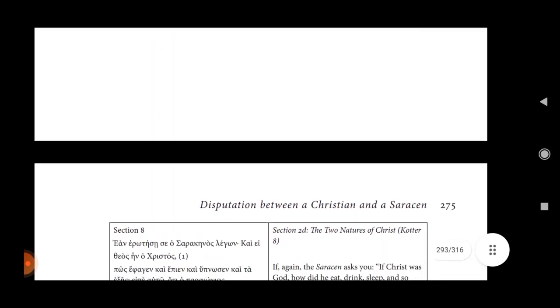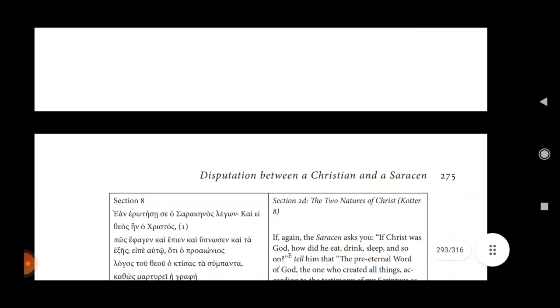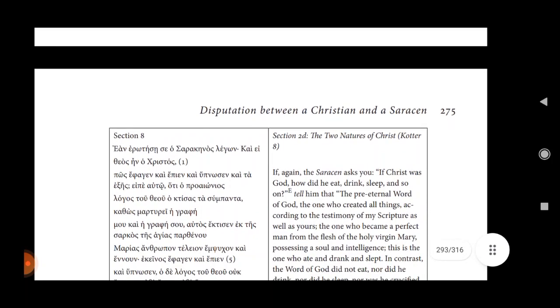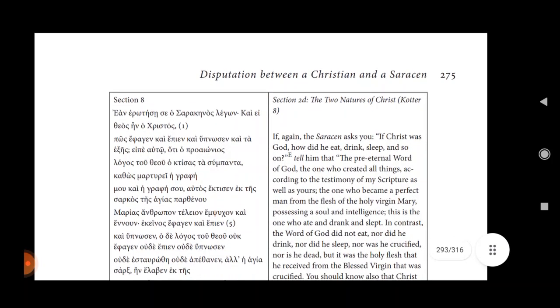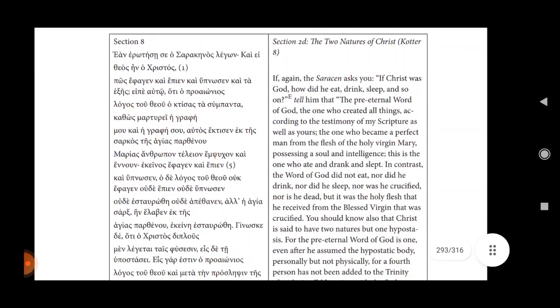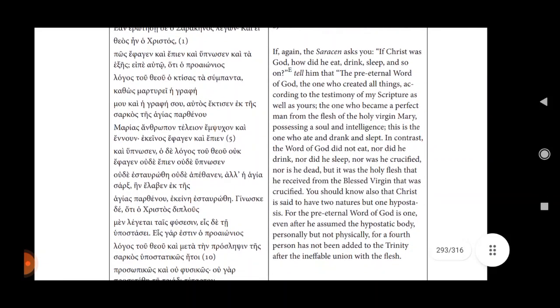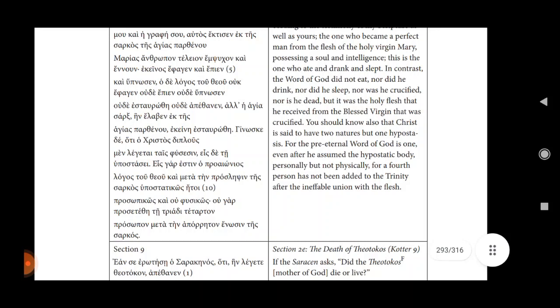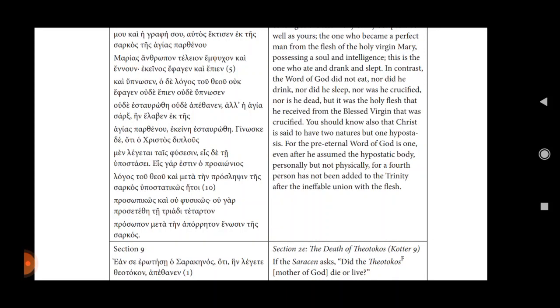Section 2d, The two natures of Christ. Quotex 8. If again the Saracen asks you, If Christ was God, how did he eat, sleep, drink, and so on? Tell him that the eternal word of God, the one who created all things, according to the testimony of my scripture, as well as yours, the one who became the perfect man from the flesh of the Holy Virgin Mary, possessing a soul and intelligence. This the one who ate and drank and slept.